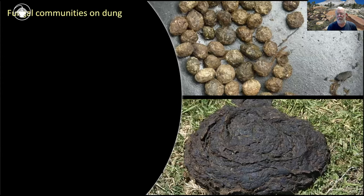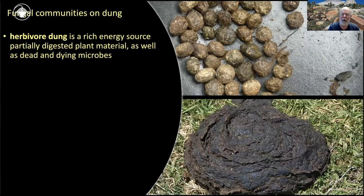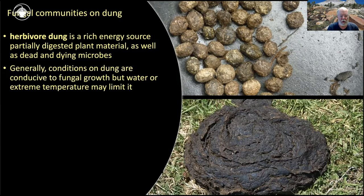Now let's turn to dung fungi. Dung is our energy source. In a dung fungal community, dung is high energy — it's partially digested plant material. It also has lots of dead and dying microbes that were active in the gut of the animal. Once released from it, the environment changes dramatically and they're dying off, so their body mass is also energy for other fungi. Generally, conditions on dung are conducive to fungal growth, but water or extreme temperature can limit this.